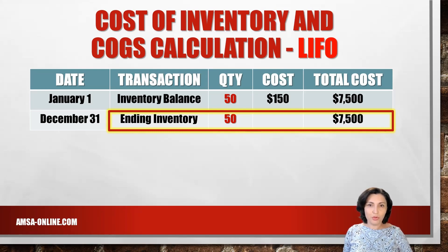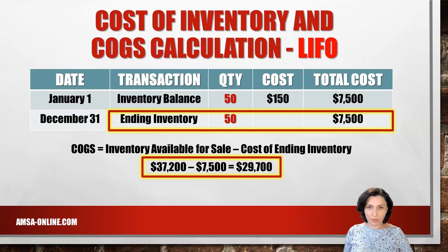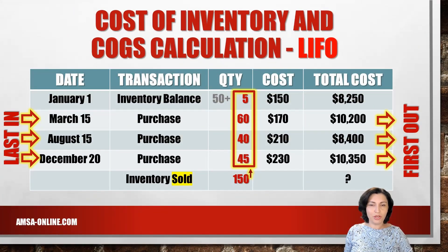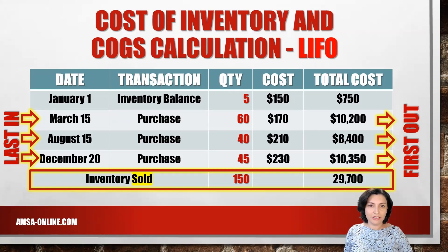To calculate cost of goods sold under LIFO, we deduct ending inventory from cost of goods available for sale. The total cost of goods available for sale is $37,200. Deducting the ending inventory of $7,500 gives a cost of goods sold of $29,700. Alternatively, using the direct approach — with most recent purchases sold first — we arrive at the same result: $29,700.